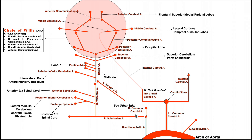Let's first talk about the subclavian arteries. Here's our right subclavian artery. The subclavian artery is going to continue away from the heart toward the right side, eventually passing underneath the clavicle over the margin of the first rib, and it will become the axillary artery on the right side. But well before it does that, it's going to give off the vertebral artery — specifically the right vertebral artery. We would also have a left vertebral artery that would ultimately come from the left subclavian artery.